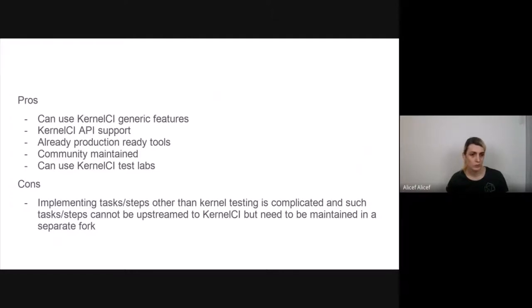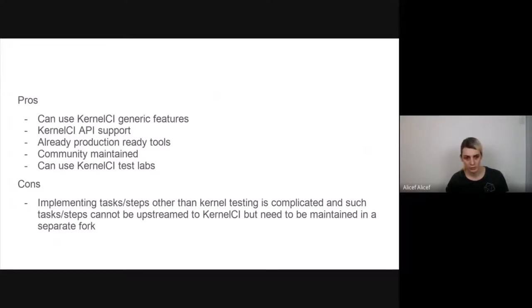The cons of KernelCI native include the difficulty of implementing tasks or steps that are not in the scope of KernelCI — that is, not about testing the upstream kernel. For example, with Gen2 we have some steps for testing certain kernel packages, and such things are currently not possible to upstream to KernelCI because they are not in the scope of KernelCI. In such cases, a separate fork of KernelCI would be needed.